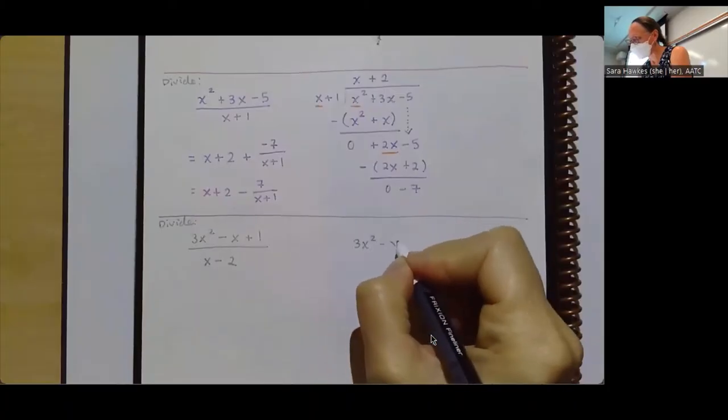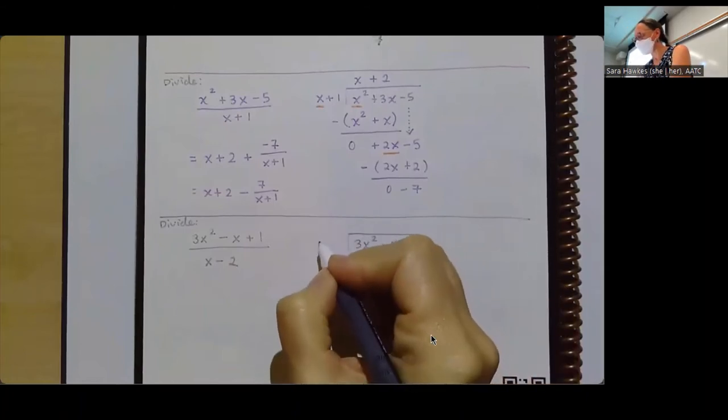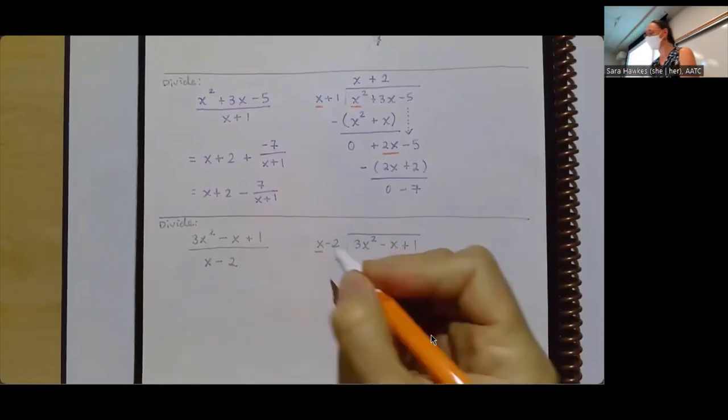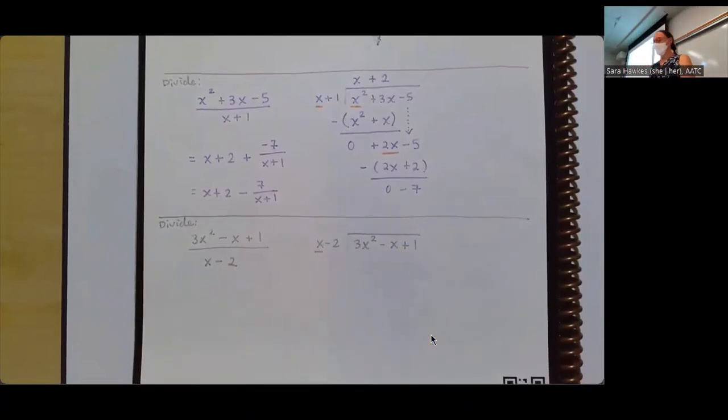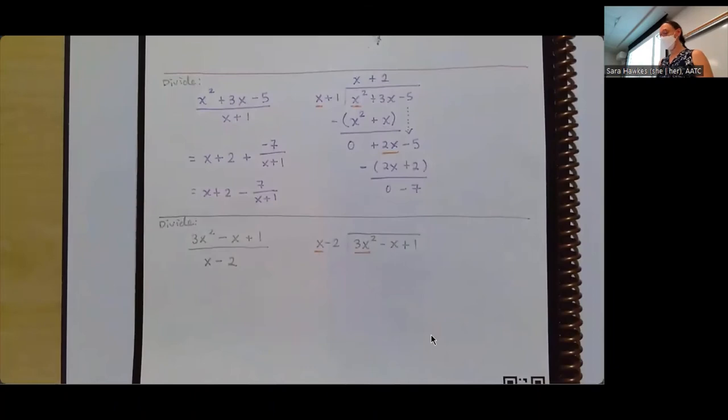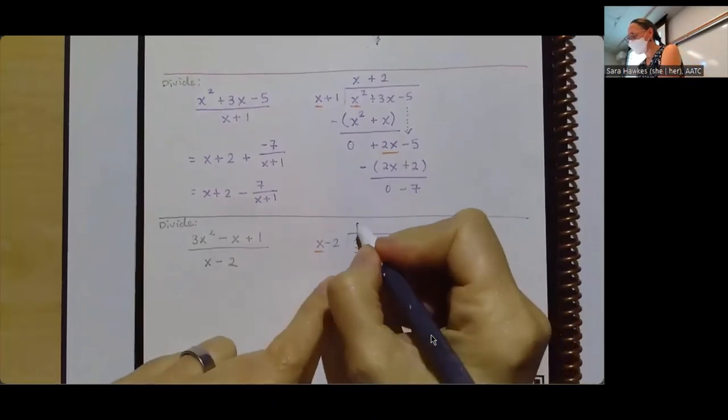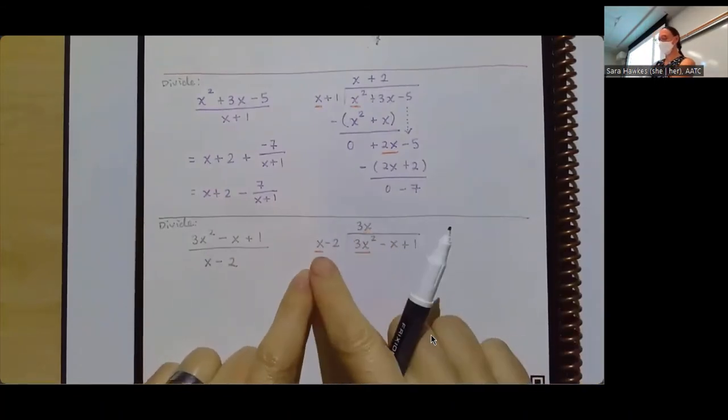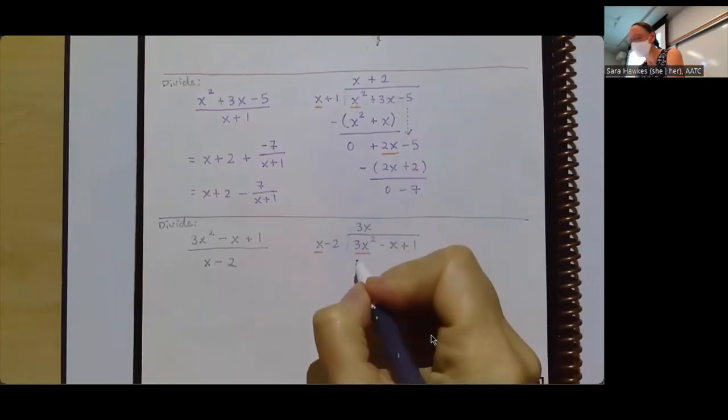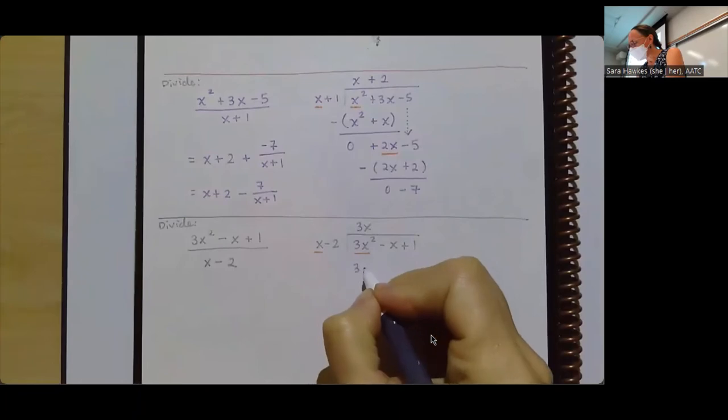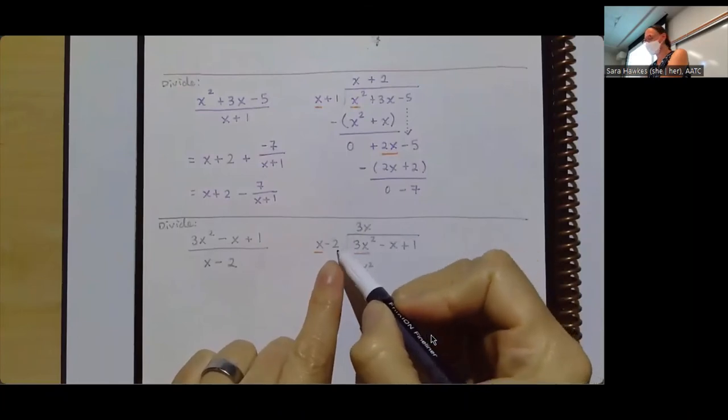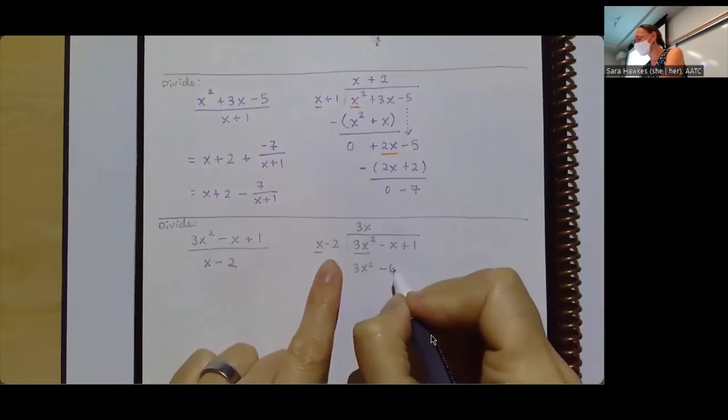3x squared minus x plus 1. And inside, I've got an x minus 2 outside. So I'm going to focus on that largest power of x out front. So when I'm thinking about x times what is going to get us 3x squared, a bunch of folks as I was walking around have that first step. So this is going to have to be 3x, because 3x times x would give me the 3x squared. But the thing that we need to be super careful about is when I multiply that down, I've got 3x squared and I have to remember to multiply the 3x by the negative 2. So 3x times negative 2 is going to give me negative 6x.